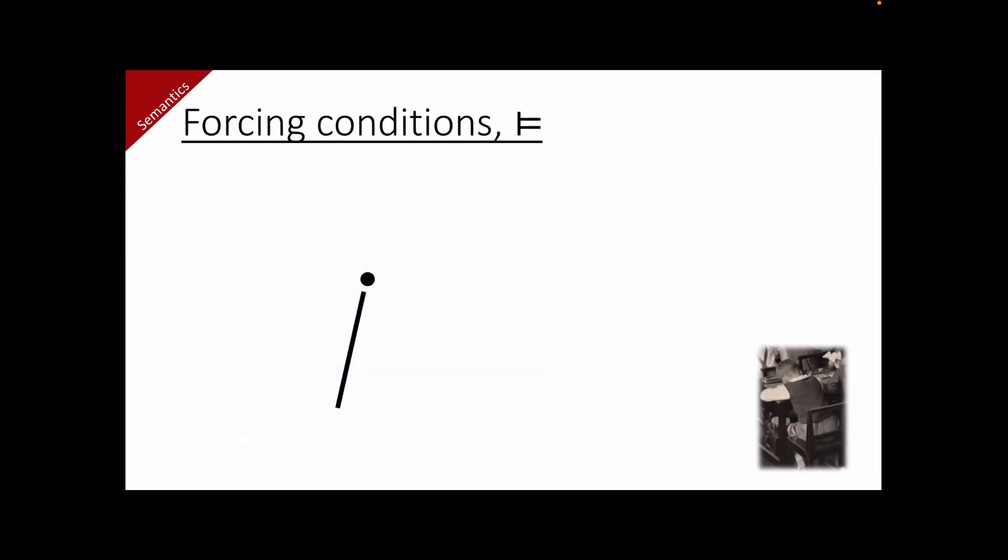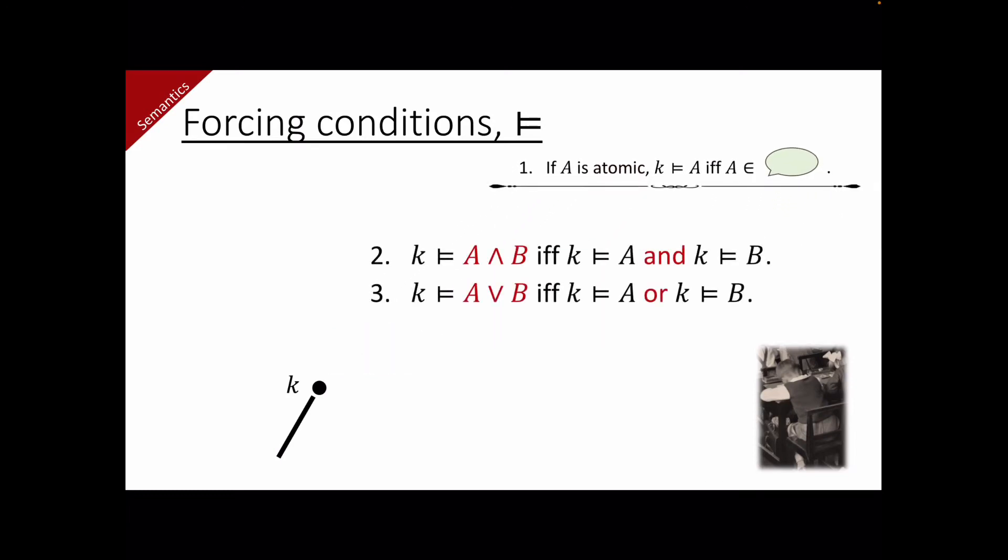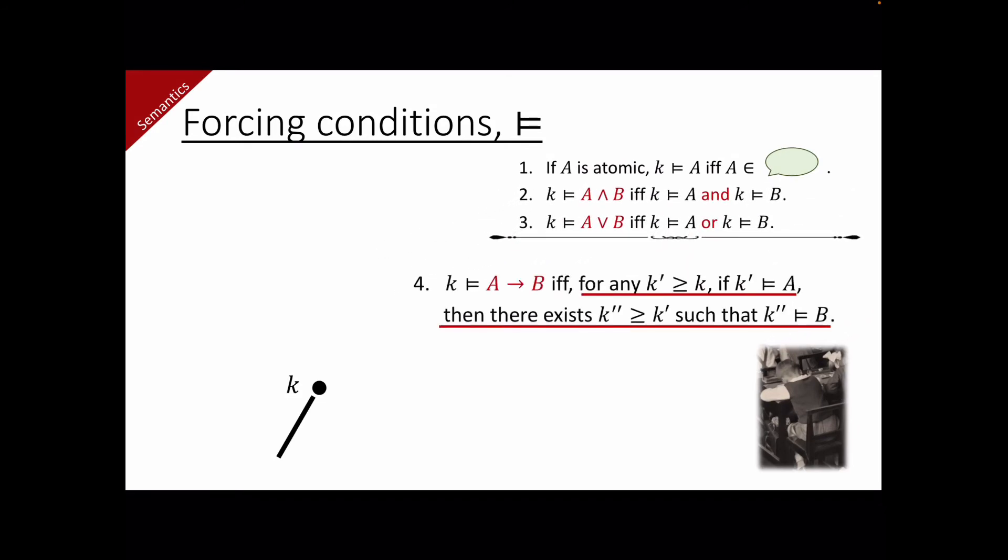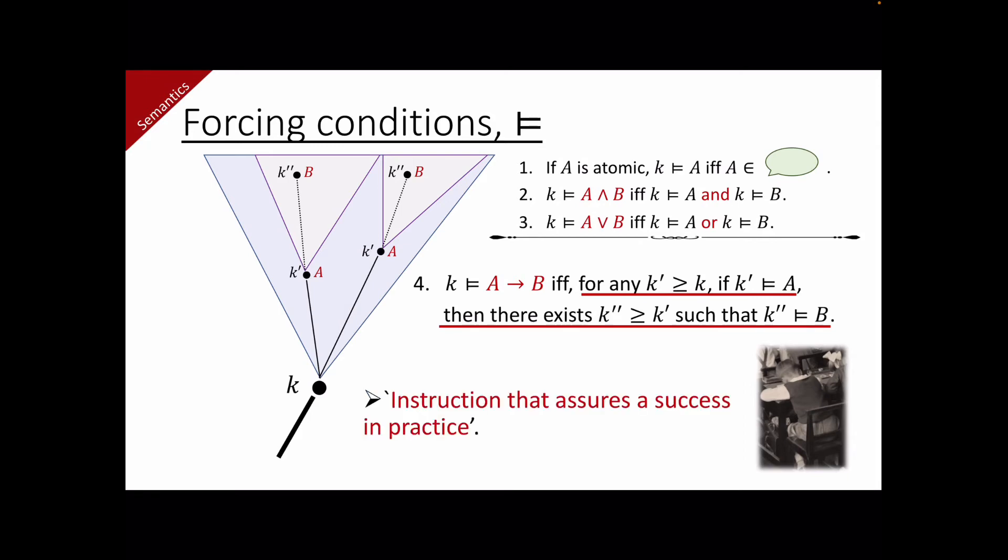Now we define the forcing conditions as follows. If A is atomic, then it holds at k, if and only if we can find it in the green bubble of k. Conjunction and disjunction are as usual. And what is special about this semantics are implication and negation. Implication A to B holds at k, if and only if for any k prime at which A holds, there exists k double prime at which B holds. Note that B doesn't have to hold at k prime, just as intuitionistic logic requires.